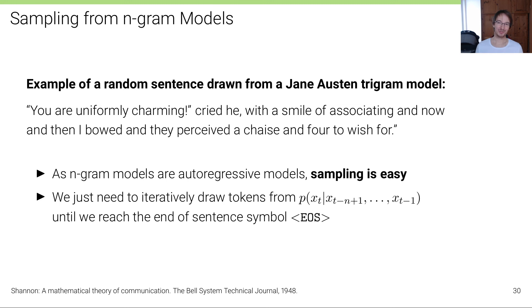As n-gram models are autoregressive models, we know already sampling is easy. We can just create a word given the previous words, or in such a trigram model we create a word given the two previous words. We iteratively draw new tokens from this conditional distribution until we reach the end of sentence symbol EOS. Here is a random example drawn from a trigram model that has been trained on Jane Austen text.